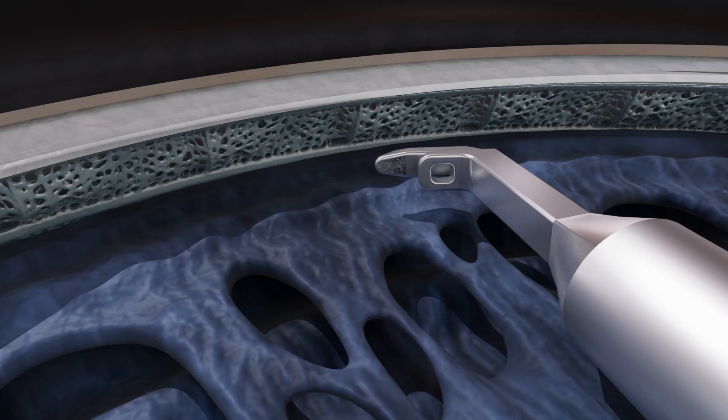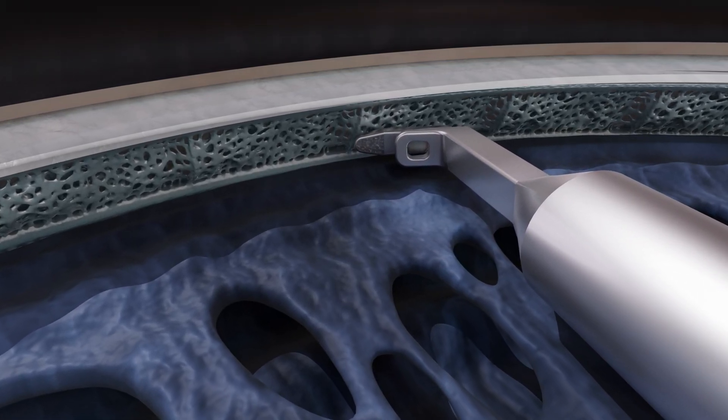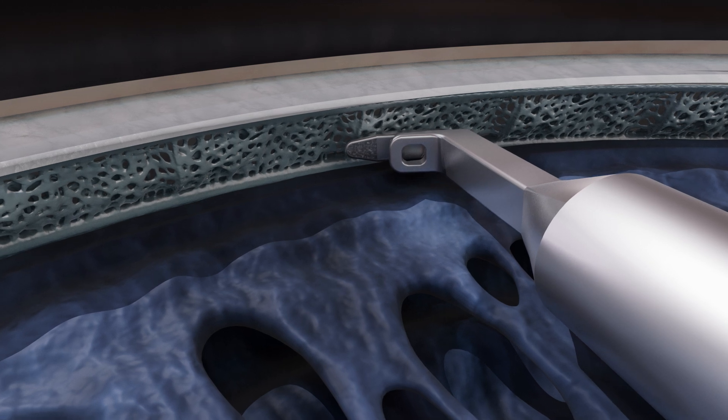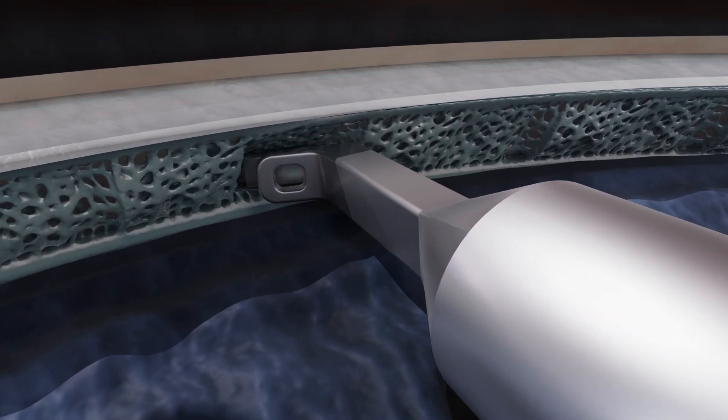From here, the trabecular meshwork is identified under gonioscopic visualization. Using the rounded toe to puncture the trabecular meshwork, the lower foot is advanced into Schlemm's canal.